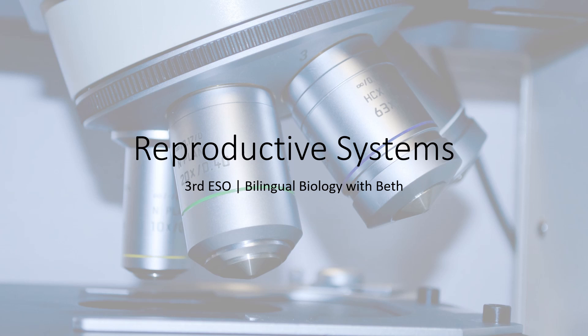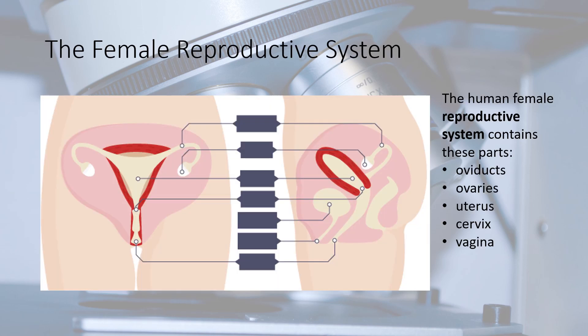Hi everybody. This video will look at the anatomy of the male and female reproductive systems. Listen carefully because there will be some activities on this. We are going to look at the female reproductive system first, because, well, ladies first.